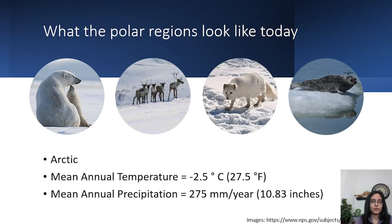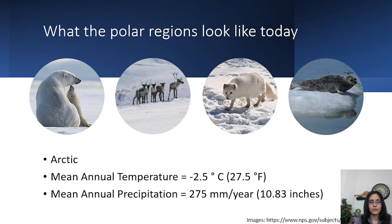If you were to close your eyes and think about what the North Pole or the Arctic looks like, you might come up with images of polar bears, caribou, arctic foxes, and seals — an environment that looks very white with lots of ice and snow. If we were to take a thermometer there, we'd measure a mean annual temperature of about minus 2.5 degrees Celsius, or 27.5 degrees Fahrenheit.